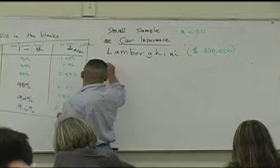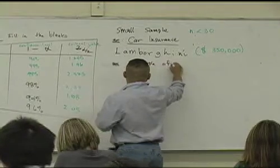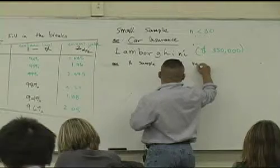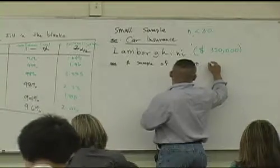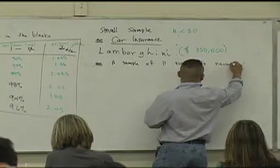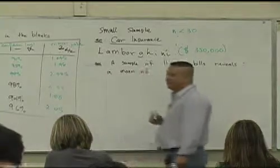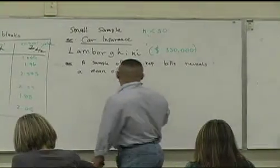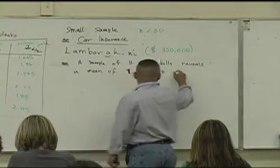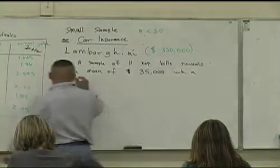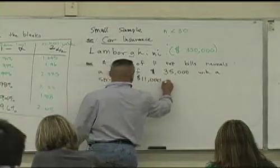So for example, what you can do then is this. We're going to create a scenario and we're going to say a sample of 11 repair bills reveals a mean of, hmm, this is a Lamborghini. You crash it and repair it. Let's say a mean repair bill of, oh I don't know, $35,000 with a standard deviation of maybe $11,000. Okay.